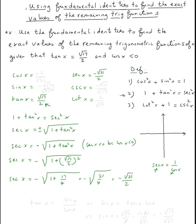Once we get secant, cosine is just the reciprocal, so cosine of x equals negative two over square root of twenty-one.